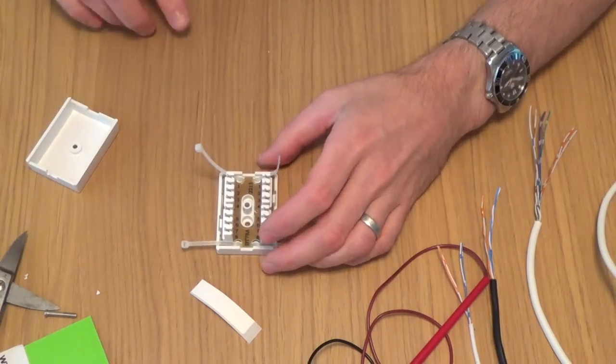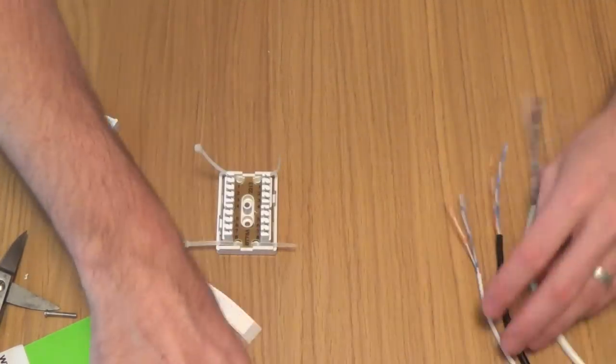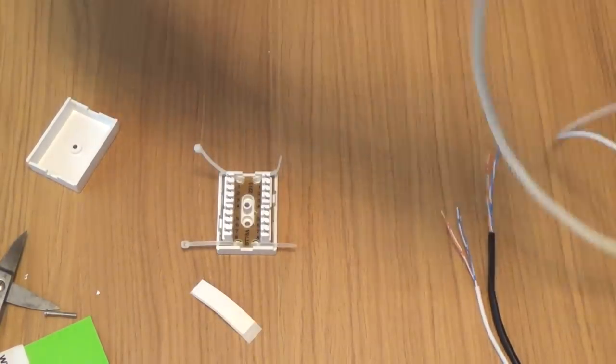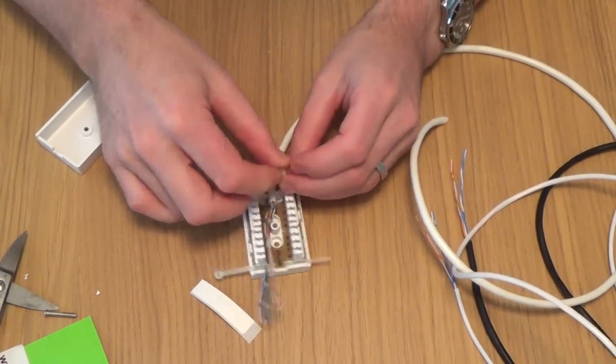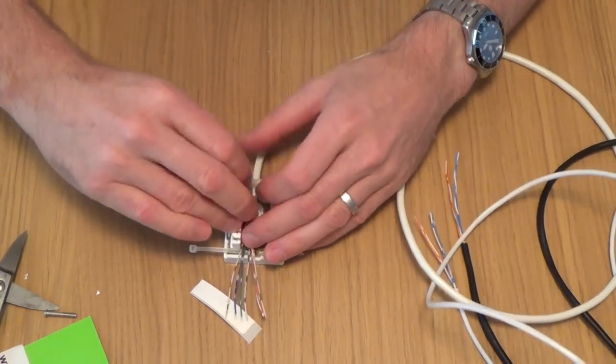Now it doesn't matter which one the live wire goes in. Remember, they're all going to get connected up together. So we said that this four pair was going to be our live one. So when you put the cable tie on, always cable tie the sheath and not the wires.